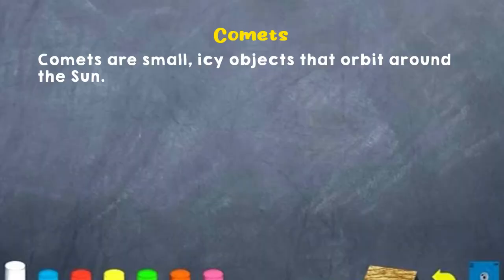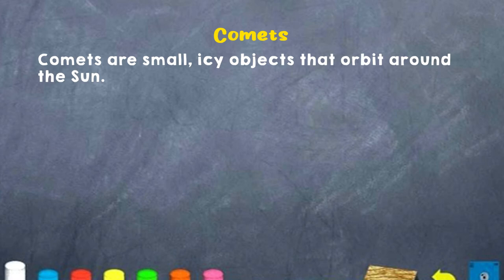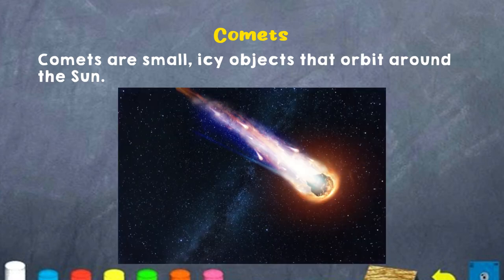The next member of the solar system is called comets. Comets are small icy objects that orbit around the sun. Here, boys and girls, you can see an image of a comet.